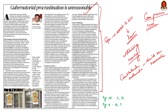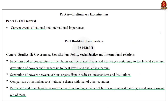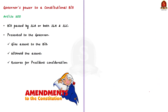Let us first learn about the constitutional provision available to the governor with regards to a bill, then see the issues in the governor's power, and finally a comparison with US and UK governments. According to Article 200 of the Indian Constitution, when a bill has been passed by the state legislative assembly and also by the state legislative council, it has to be presented to the governor, because it will become an act after the governor gives his assent to the bill.